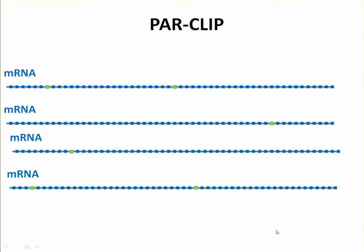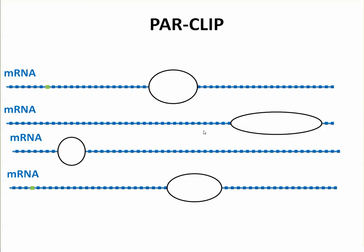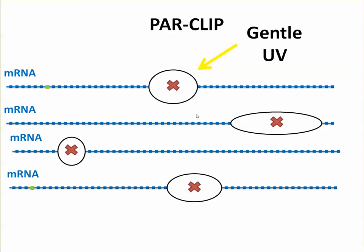PAR-CLIP is different in that the researcher adds a special nucleotide at a low concentration to the cell, which gets randomly incorporated into every single RNA in the cell including mRNAs, microRNAs, small RNAs, and proteins again that are bound to the mRNA at these special locations where the nucleotide is. When gentle UV is used, only the proteins bound at these special locations get cross-linked, which is a cleaner process than what we had before.